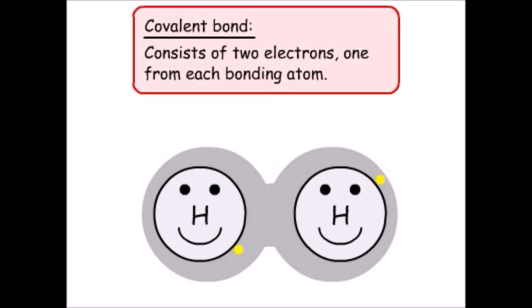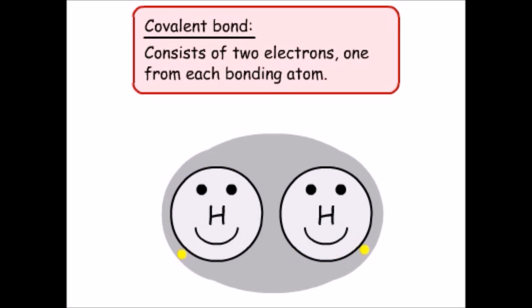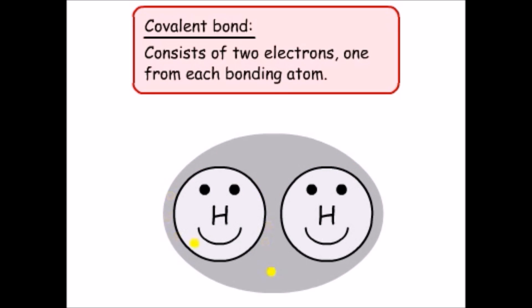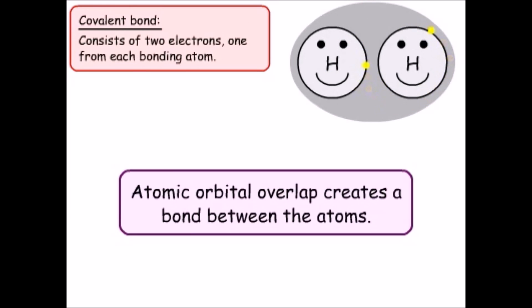Electrons in valence orbitals take part in bond formation. Valence orbitals with single electrons overlap to make a bond with a pair of electrons. The overlap is the bond between the atoms.